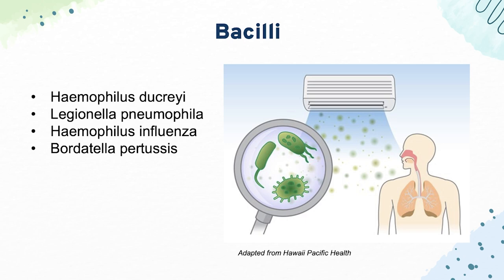There are three stages to Bordetella pertussis disease. The first is catarrhal, which presents with fevers. Then paroxysmal, which involves cough. And then convalescent, which is a gradual recovery.